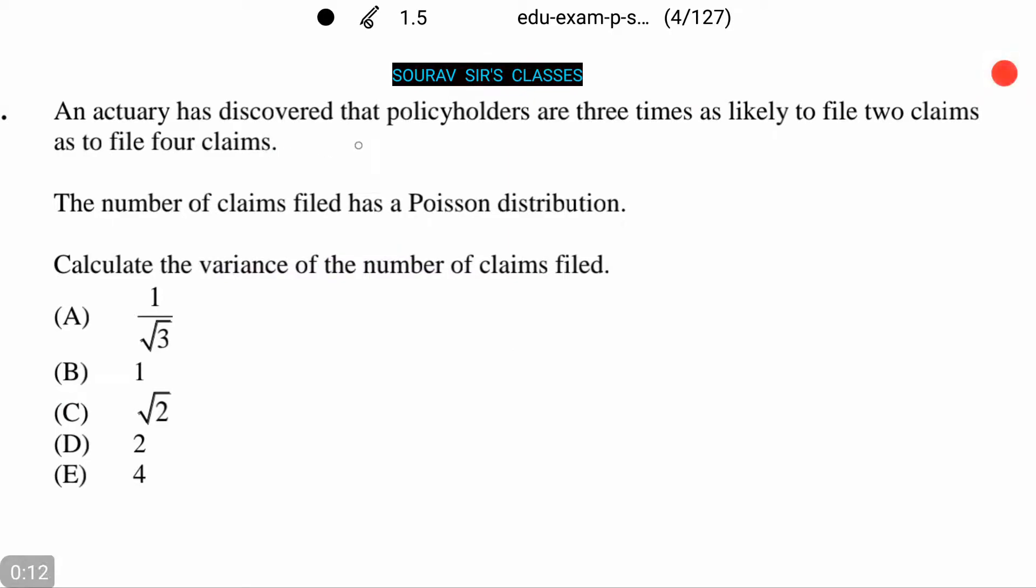Now, an actuary has discovered that policyholders are three times as likely to file two claims as to file four claims. The number of claims filed has a Poisson distribution. These are the given information to us. Now we need to calculate the variance of the number of claims filed.